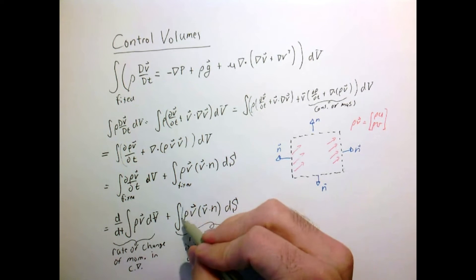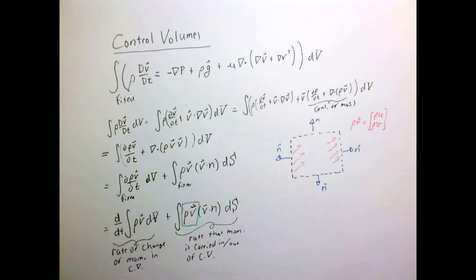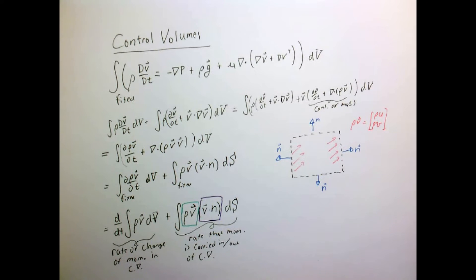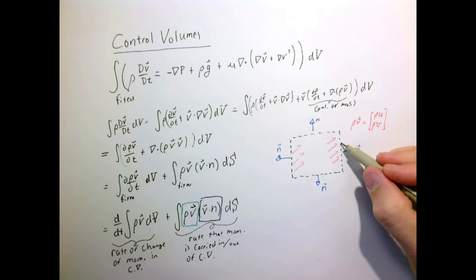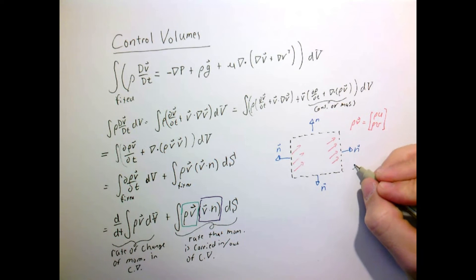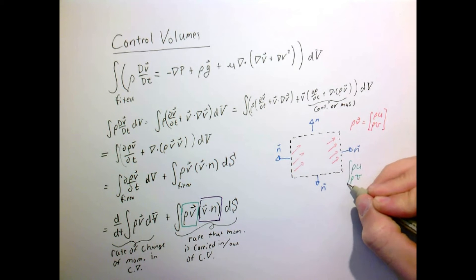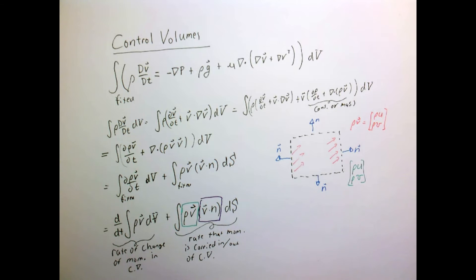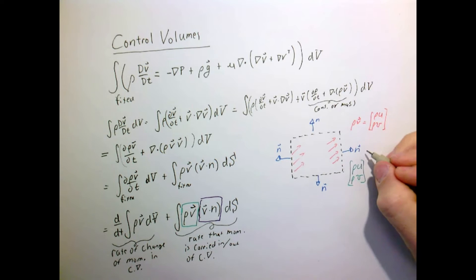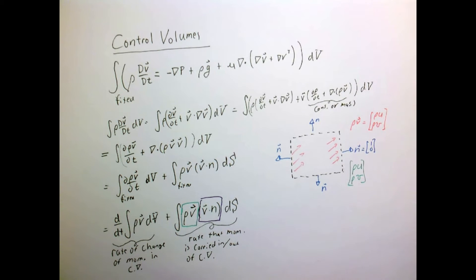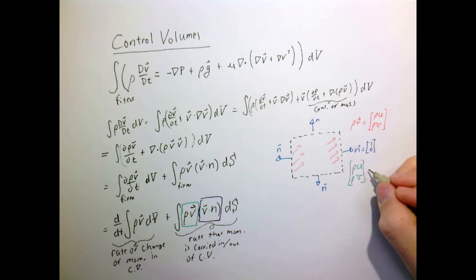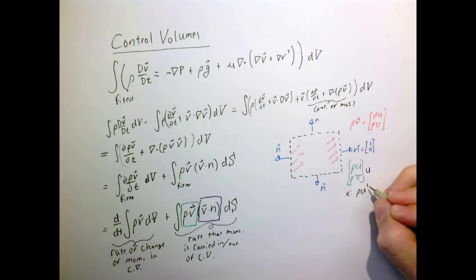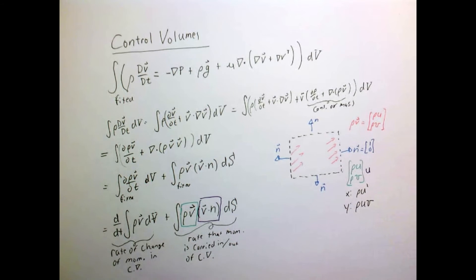Now let's look specifically at the momentum flux term: rho times v (the momentum vector) times v·n, which is the rate that momentum is carried in or out of the control volume. On the right boundary, the momentum vector has components rho·u and rho·v. The v·n term is the x-component of velocity dotted with the outward normal. Since the velocity and normal vector are aligned there, v·n is simply u, so the x-component is rho·u² and the y-component is rho·u·v.